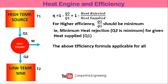The efficiency formula eta equals 1 minus Q2 by Q1 is applicable for all heat engines — whatever the type of heat engine, you can use this formula. The efficiency of a heat engine is normally less than 60 percent and should not be above 60 percent except for theoretical engines.